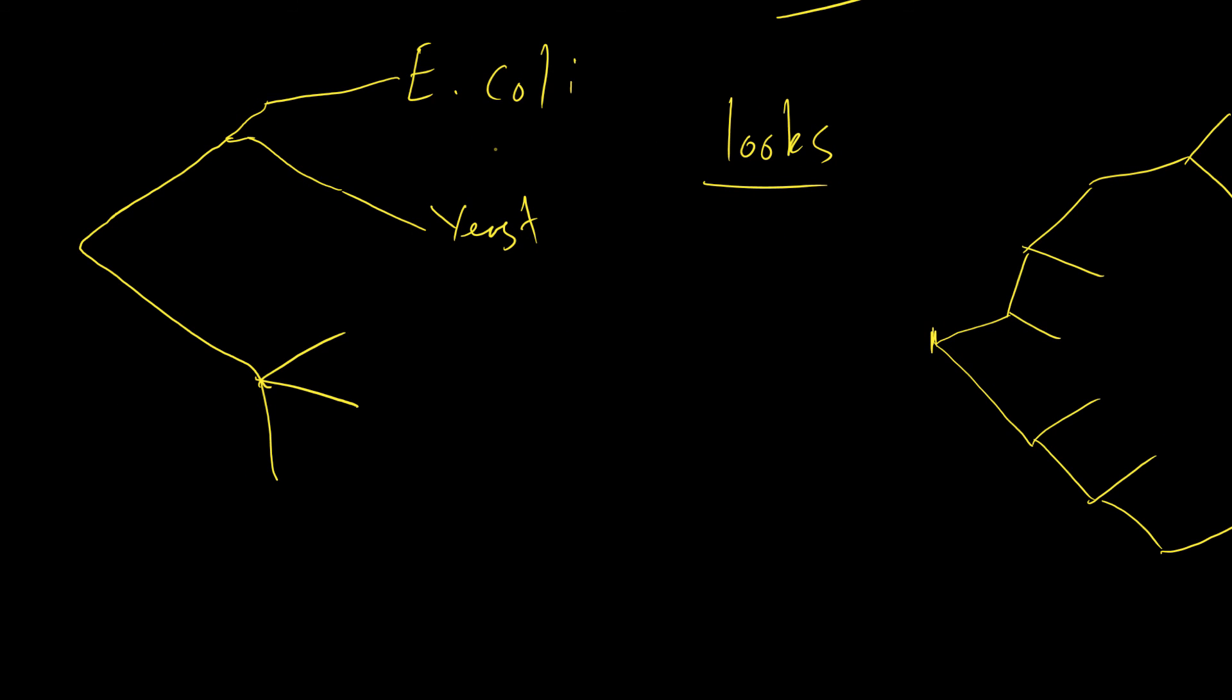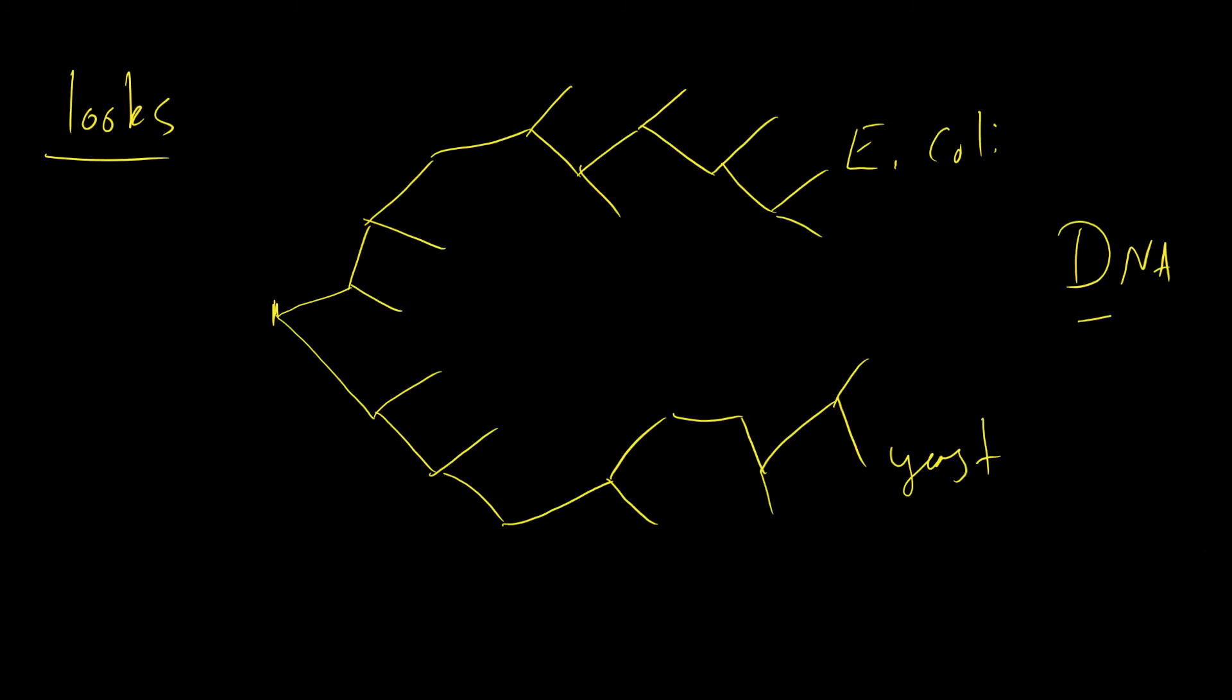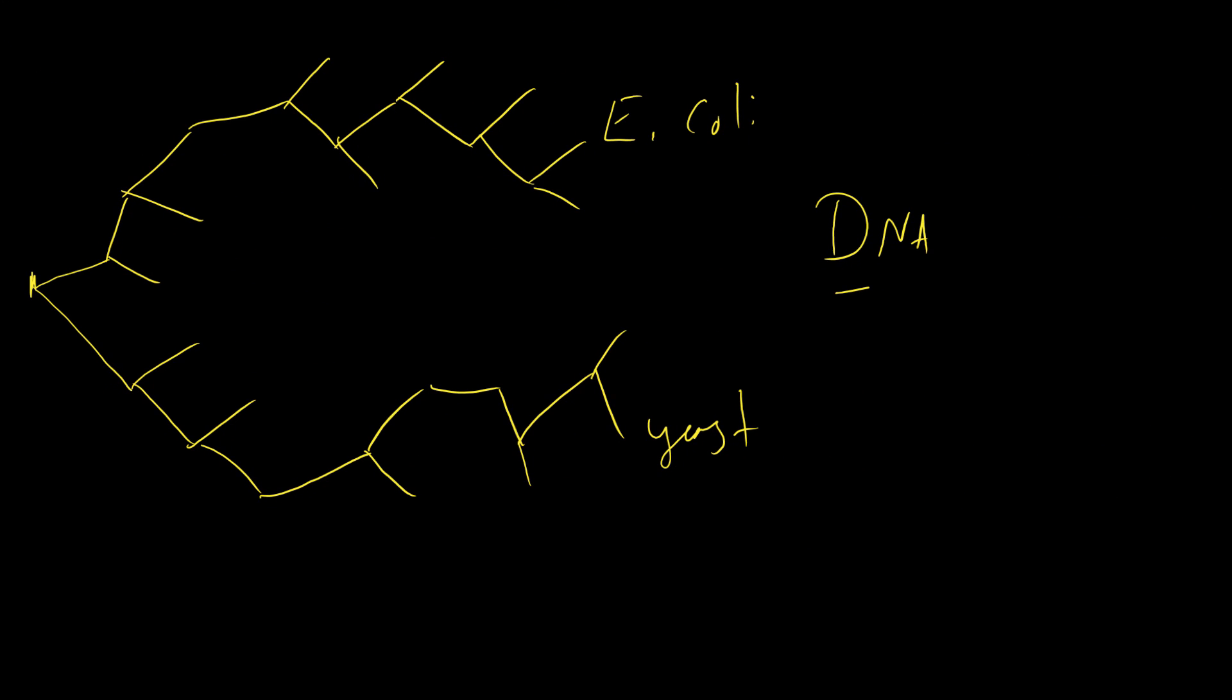If you were basing it on looks, E. coli and yeast might be really close together because they're single-celled organisms. But if you were grouping them based on their DNA, which is actually more accurate in terms of time, then E. coli and yeast are very, very, very different organisms. They separated from each other millions and millions of years ago, maybe even billions of years ago. And so that is why you would get a tree which looks like this.